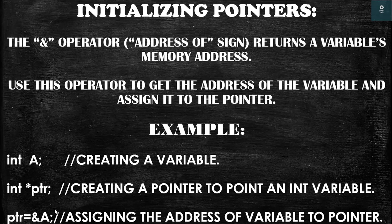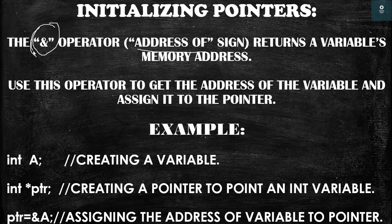The AND operator, which is also called the address-of sign, is used for returning the address of a variable. If you want to access the address of any variable, just use this operator and you will get the address. Use this operator to get the address of the variable and assign it to the pointer.